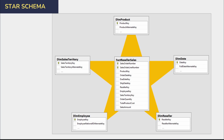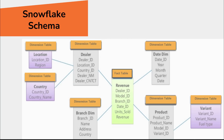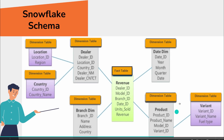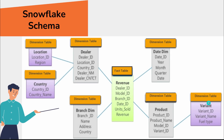The snowflake schema is when you have an additional table connected to the dimension table — like this table being connected over here. On the top you can see this dimension table has two more dimension tables connected to it, so that is your snowflake schema. There's also another kind called the constellation schema, which means you have multiple fact tables and those fact tables are connected through a dimension table.